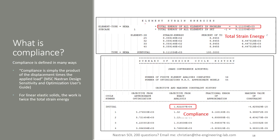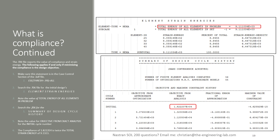The next question: what is compliance? In your F06 file, you'll find a section called element strain energies. In this example with one load case, the strain energy is about 9,000. If we look at the compliance for the starting initial design, the compliance is 18,000 — the total strain energy is half the compliance. So if the objective is to minimize compliance, you're effectively minimizing the total strain energy, which is another way of saying you're maximizing the stiffness. There are also some instructions here on how to enable this output in the F06 file.